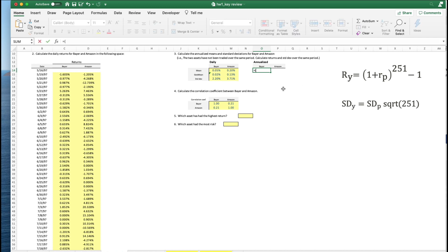So if we do this, 1 plus mean, or weekly, or daily mean, raised to the 251 minus 1. Copy that down. Do it for the GL mean. Do the standard deviation. So I want to do equals this times square root of 251. There we have it. I'm going to put this in percentage terms.